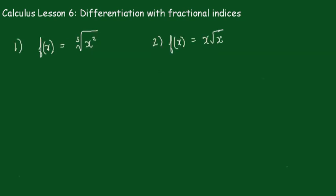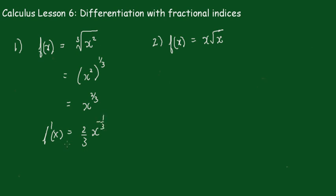A couple of examples — pause the video and have a go. For the first one we put it in index form: x squared to the one-third equals x to the two-thirds. So f'(x) — the two-thirds comes down: two-thirds times x to the (two-thirds minus one), which is x to the negative one-third.